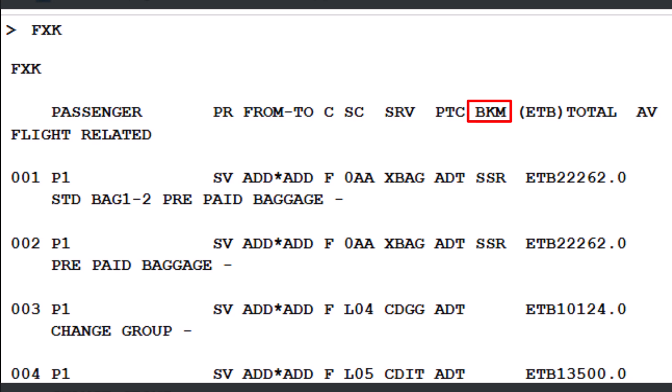The following booking method codes may be shown: SSR (Special Service Request Element) indicates a special service request made by the passenger. SVC (Manual Auxiliary Segment) represents a manually added auxiliary segment. SEA (Seat Request Element) shows the seat request associated with the booking. CBD (Contact Carrier for Booking Method) indicates the carrier must be contacted. NBR (No Booking Required) indicates no booking is needed. A blank may be displayed if there is no specific booking requirement.